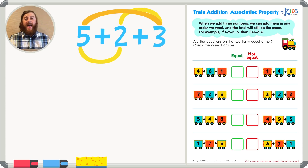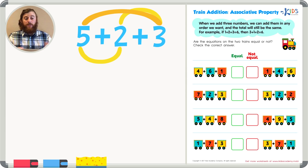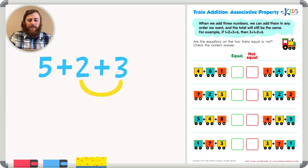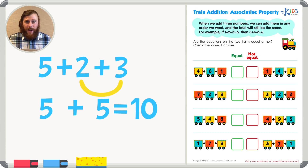I suggest adding the numbers together that make your life the easiest. So if you know a combination of numbers that when you add together you know the sum, that's what you should do first. For this example, 5 plus 2 plus 3, I know that 2 plus 3 equals 5. And then I'm just going to add 5 plus 5, and I know that 5 plus 5 equals 10. So the associative property of addition is kind of your friend — it makes adding numbers easier.